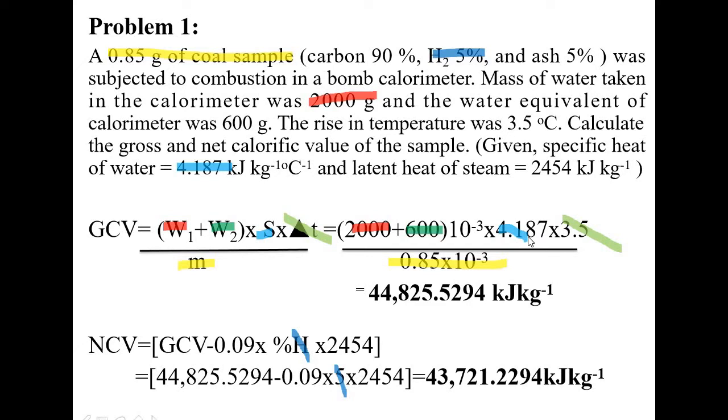Specific heat of water the value is 4.187 given. In place of S you substitute 4.187. After substituting all the values from the problem into this formula you will get the value GCV as 44,825.5294 kilojoules per kg. This value we need to substitute in the NCV formula. It is GCV minus 0.09, that's a constant. Percent hydrogen is 5 percent from the problem, so substitute 5. And 2454 as such, then calculate to get 43,721.2294 kilojoules per kg. There is a small difference between GCV and NCV. You have to read the problem and figure out the values, what corresponds to which symbol in the formula, and then do the calculations accordingly.